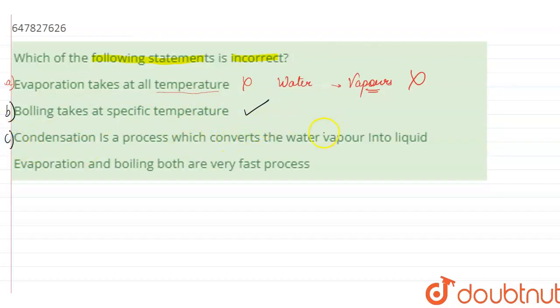Condensation is a process which converts water vapor into liquid, that is also true. Condensation is basically a process that there are vapors.